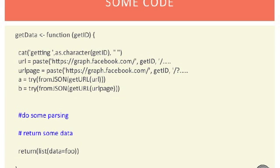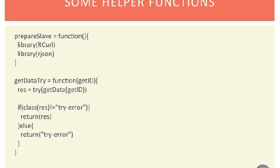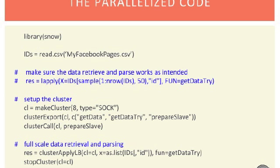Let's take a look at this get data function. This function will take an ID for a Facebook page, get it with RCurl, and then parse it with RJSON. Do some other parsing and then return the data back. The helper functions we've written here will prepare the slave with the RCurl and RJSON libraries, and then the get data try function will wrap up get data in error-catching code.